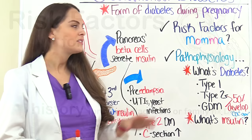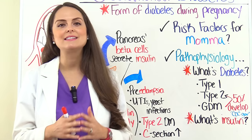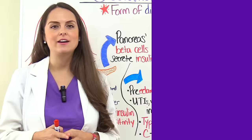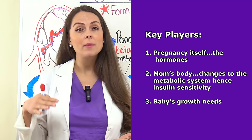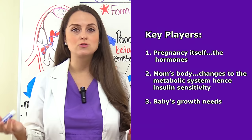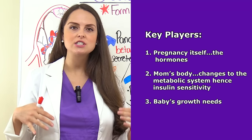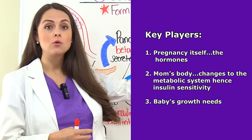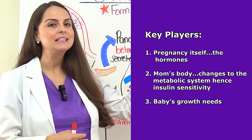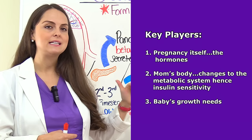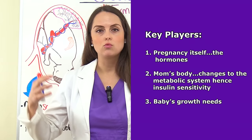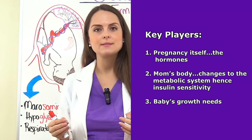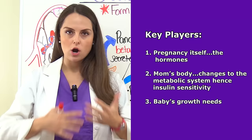Now let's talk about the pathophysiology of gestational diabetes and why it is occurring. To help us understand, let's remember three key players. The first key player is the pregnancy itself — specifically the hormones being produced to help support that pregnancy and the baby's growth. The second key player is mom's body, specifically the changes occurring to her metabolic system, because those hormones are going to influence that metabolic system and make her less sensitive to insulin — so we're going to have low insulin sensitivity. The third key player is the baby, really about the baby's growth, because at different stages the baby is going to require different nutrients. All three of these things together create this perfect storm for gestational diabetes to develop.